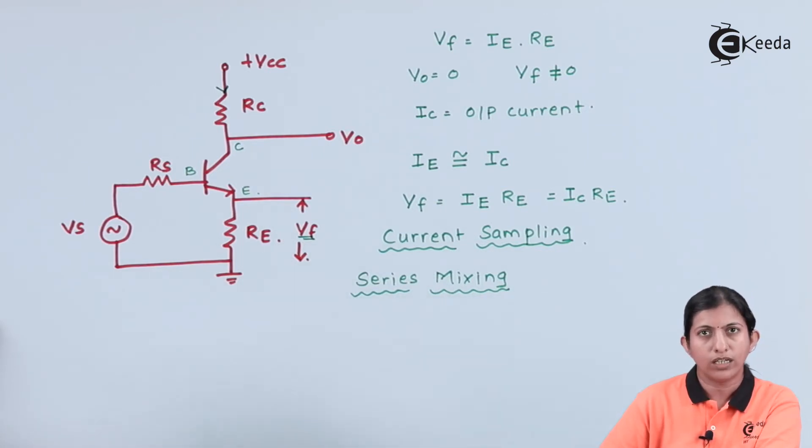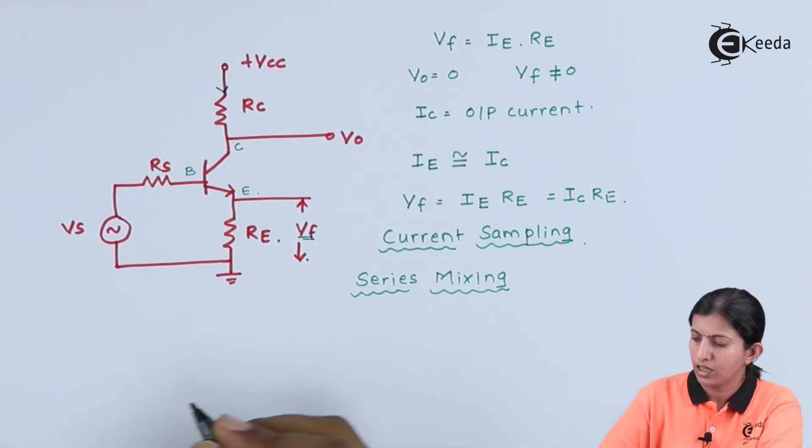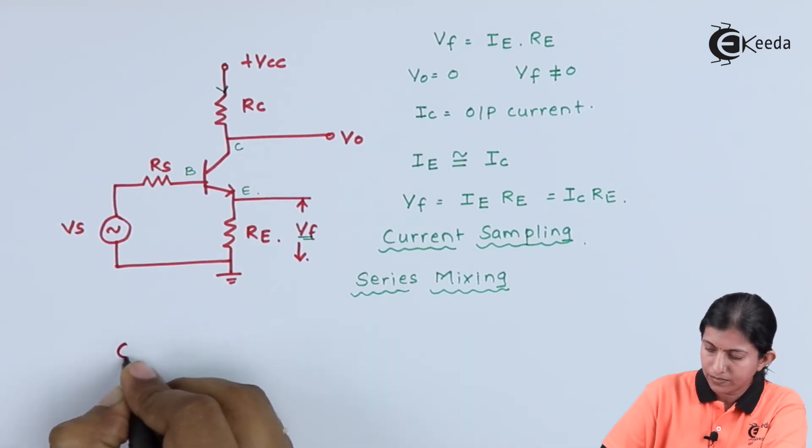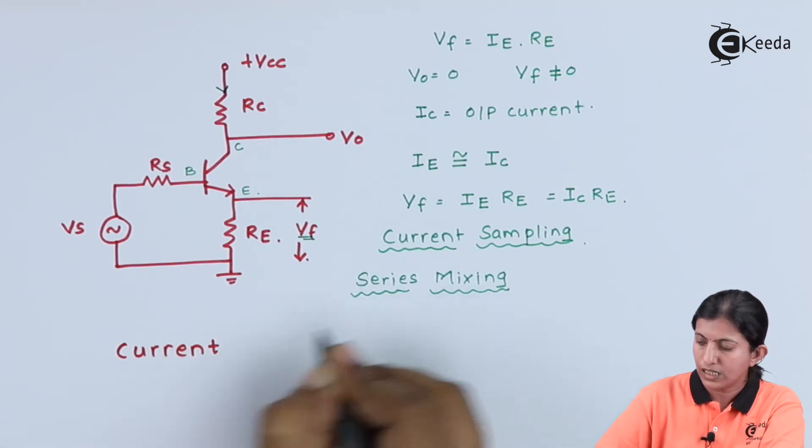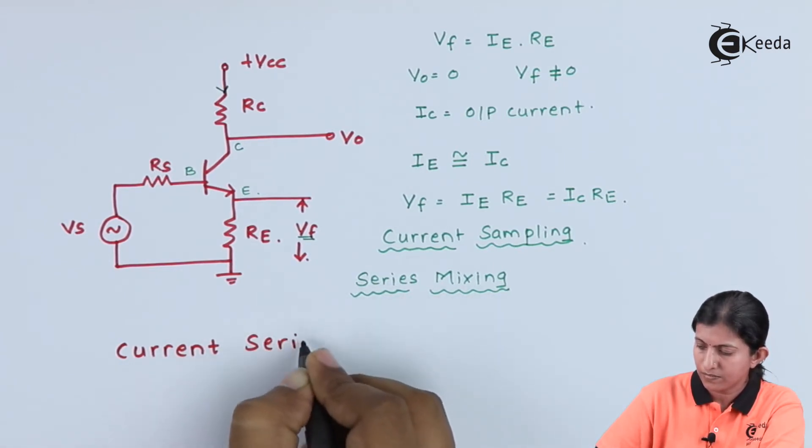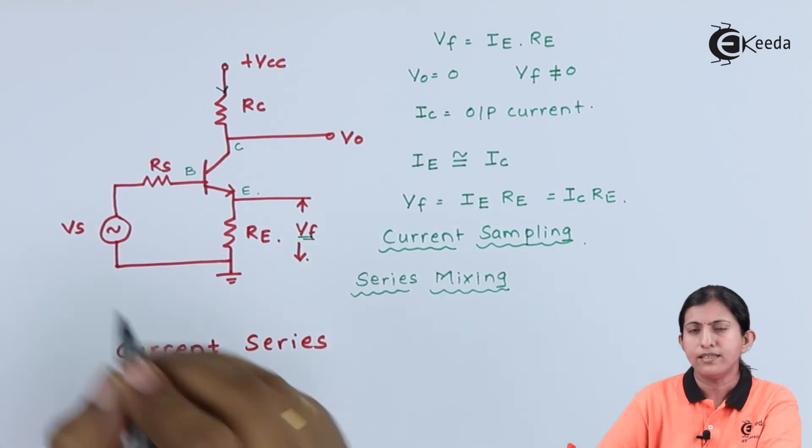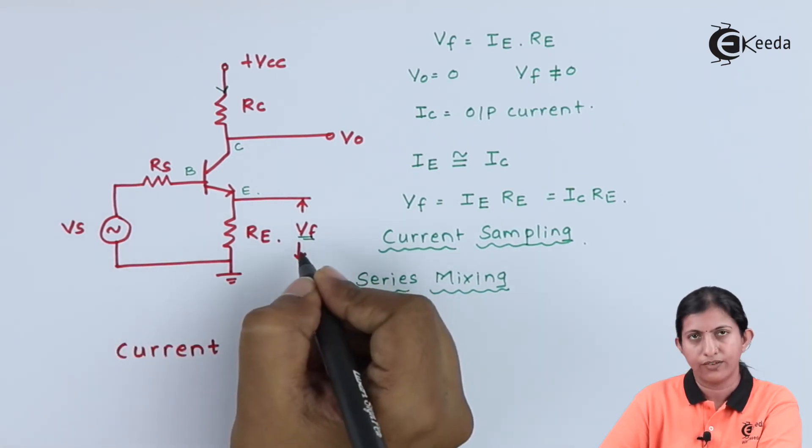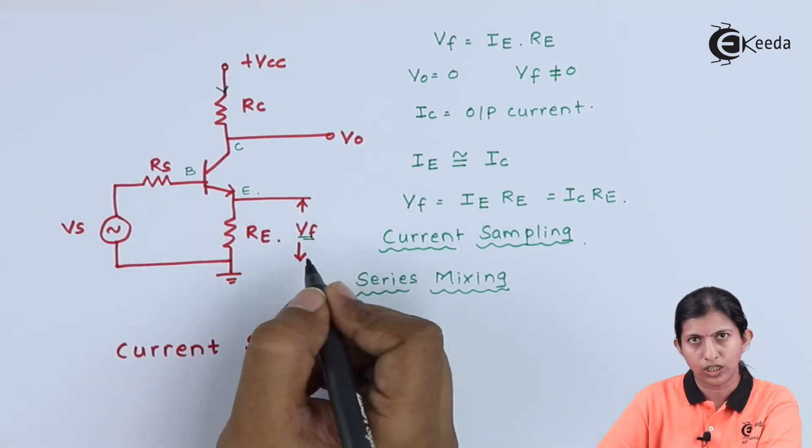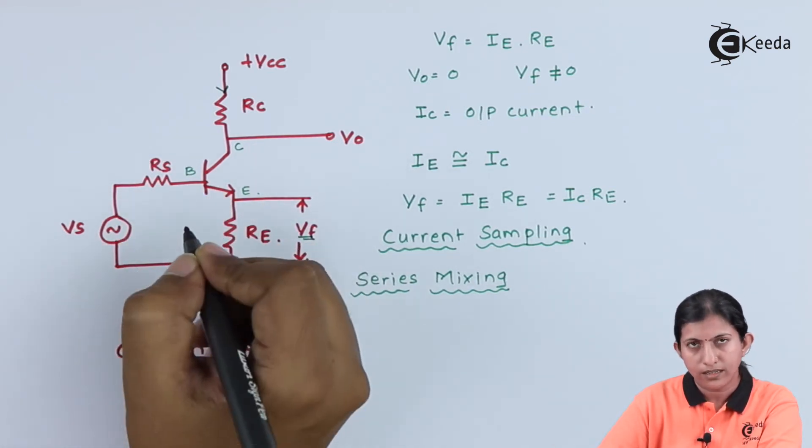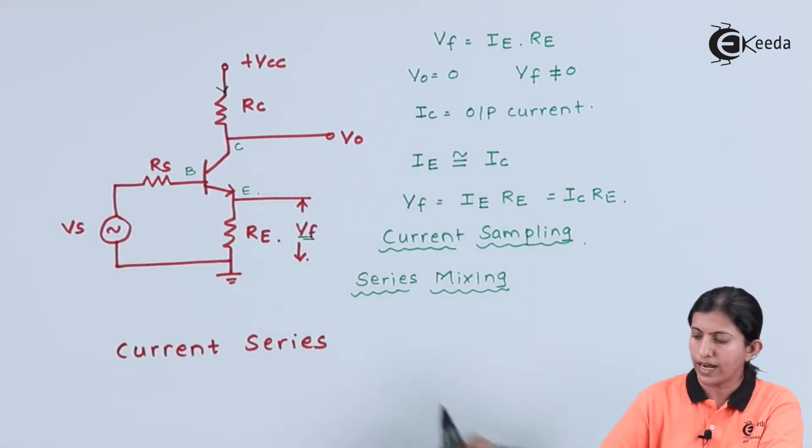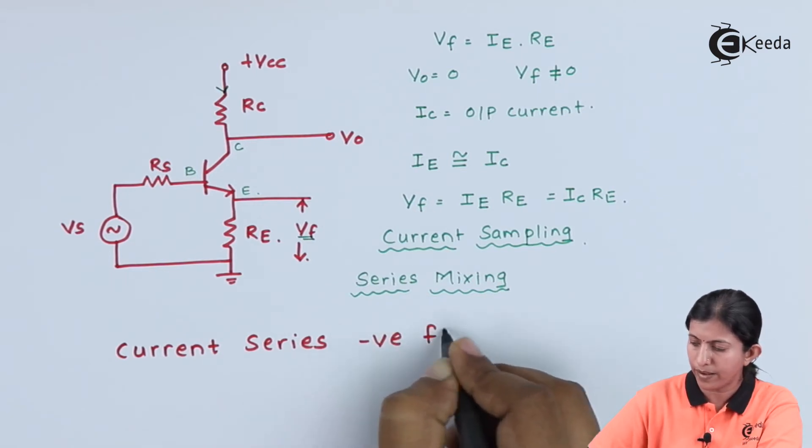So, we can write down the name of this amplifier as Current Series. As Vs and Vf are in series opposition, the input of the transistor is decreasing. And because of that, it is negative feedback.